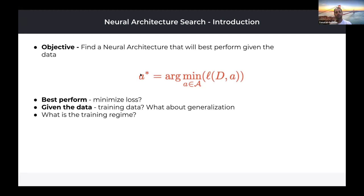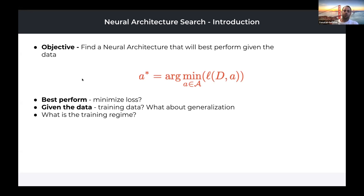What are the success metrics for our neural architecture? Also, what does 'given the data' mean — is it only training data? We need to consider generalization, so we'll have training and validation splits. But if we automatically iterate thousands of times between training and validation to find the right architecture, we may be prone to overfitting. Also, what is the training regime? We know that finding the right learning rate, optimizer, and hyper parameters is a huge challenge in deep learning, so we need to add the training regime to the optimization problem as well.